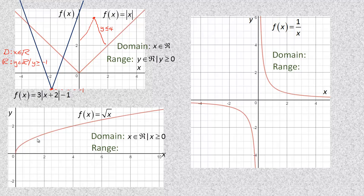This one looks like half of a parabola — it's called the square root function. The restriction on the domain is that x must be greater than or equal to 0, because I can take the square root of 0, but I cannot take the square root of a negative value. So x is only 0 and positive numbers. The range is also all real numbers greater than or equal to 0, since the lowest y value is 0 and it becomes positive going up.